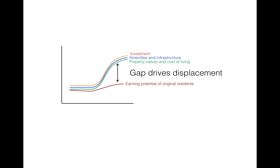Our conversation started looking at these stylistic graphs, which show behavior of the system over time. Over time, there's increasing investment in a neighborhood, which increases amenities and infrastructure, and that tends to drive up property values and cost of living. If the earning potential of original residents can't keep up with that scale of rise, then there's a gap, and that gap between cost of living and earning potential of the neighborhood's original residents is what drives displacement.